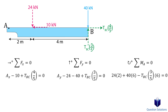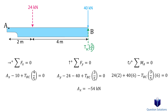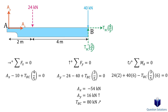So only the y components create moments. With this, we now have three equations with three unknowns, so you can solve them any way you like. Solving gives us the reactions at pin A and the tension in the cable. Notice that we got a negative value for Ax — all it means is that it's opposite to the direction we assumed.